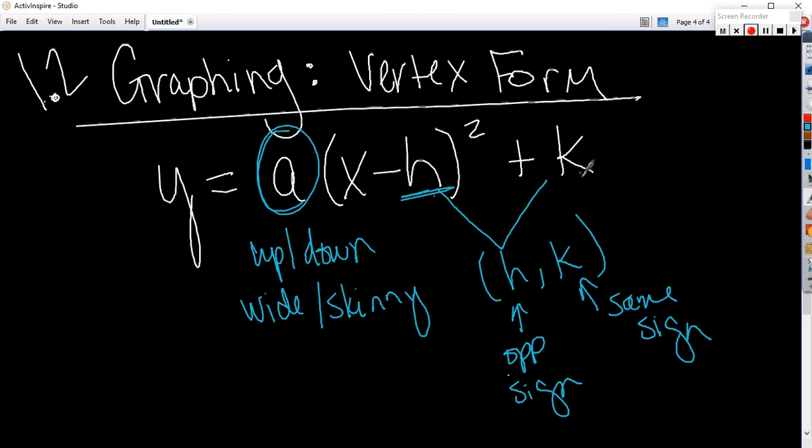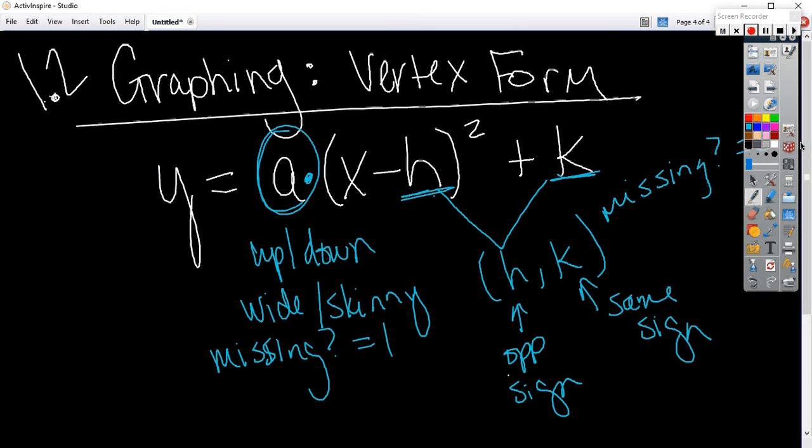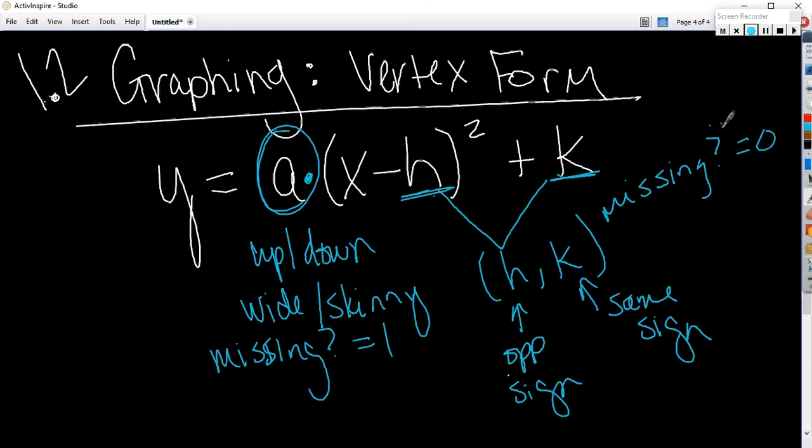Let me make sure you understand how to find the vertex. By the way, if one of these two are missing, H or K, what are they? Zero. What if A is missing? It's one. Because this is being multiplied, these are being added or subtracted. So if A is missing, it's one. If these are missing, then they're zero.